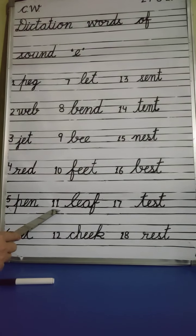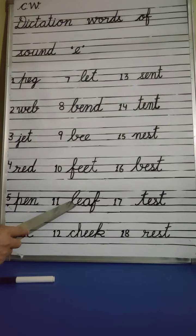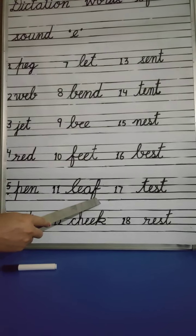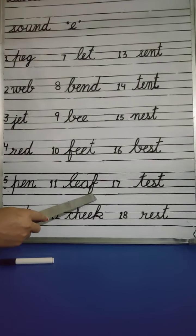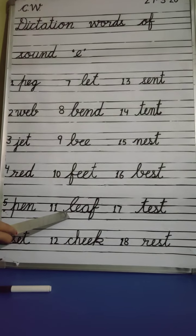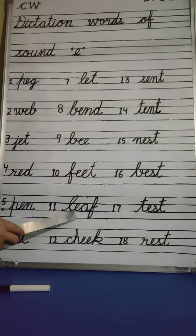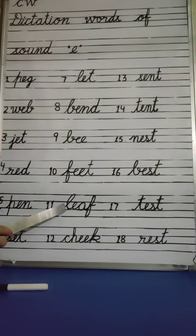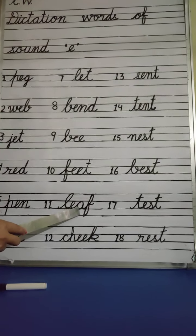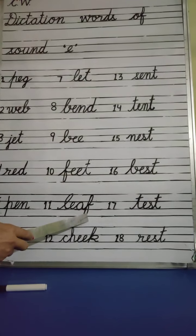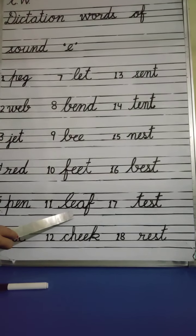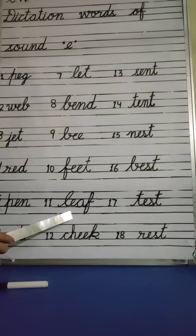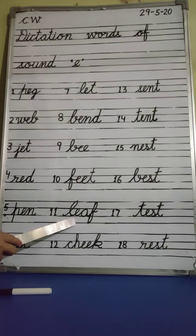Next, number 11. L, E, A, F — Leaf. What is this? Leaf. Leaf means patta. Trees par kya lagi rehti hain? Leaf. Okay.